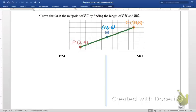What I want to do is we're going to prove that M is the midpoint of PC by finding the length of PM and MC. So I'm going to take my trusty 11,6 and put it on this other graph. Here's what I'm going to do. What I want to do is find the length of PM first. PM is this diagonal segment, and it's kind of hard to find the length of it because it's slanted. It's not horizontal or vertical.